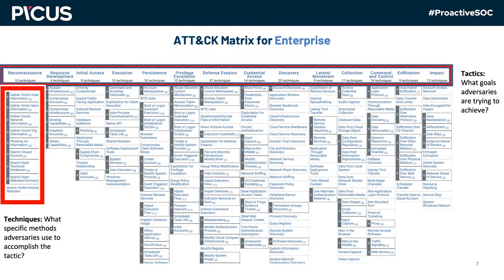This is the MITRE ATT&CK matrix for enterprise. There are other matrices, such as mobile and ICS frameworks. In this matrix, each column represents a tactic — the adversary's technical goals. To achieve these goals, adversaries use different methods called techniques. For example, for initial access, an attacker may send a spear-phishing attachment or exploit a public-facing application such as an Apache server. The framework is not static; it expands as new techniques and tactics are observed. Currently, ATT&CK for enterprise contains 14 tactics, 185 techniques, and 367 sub-techniques.